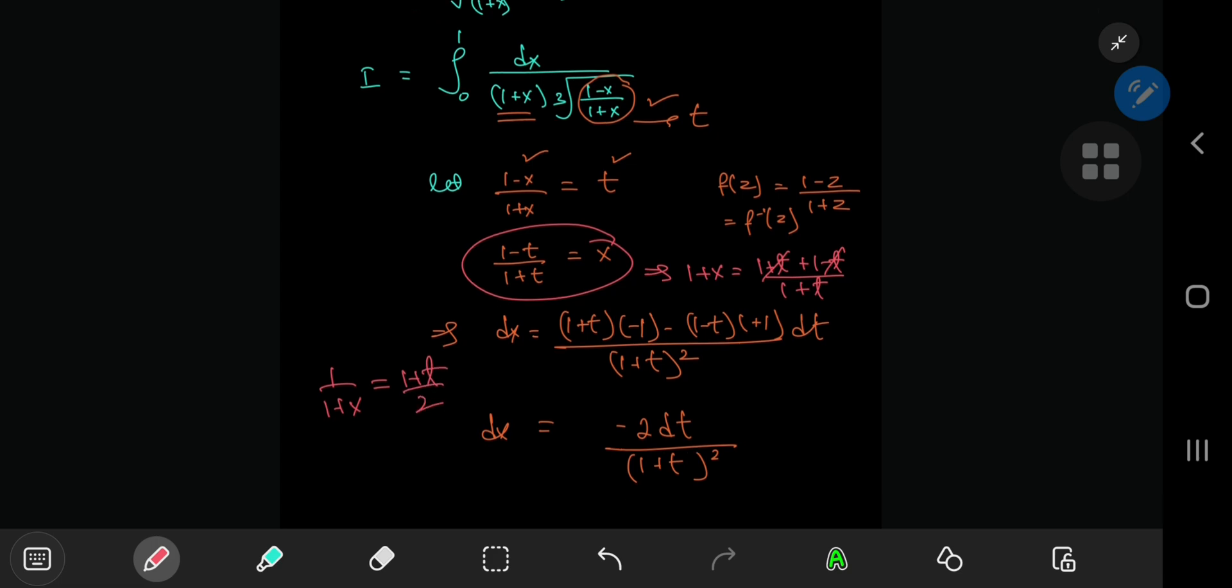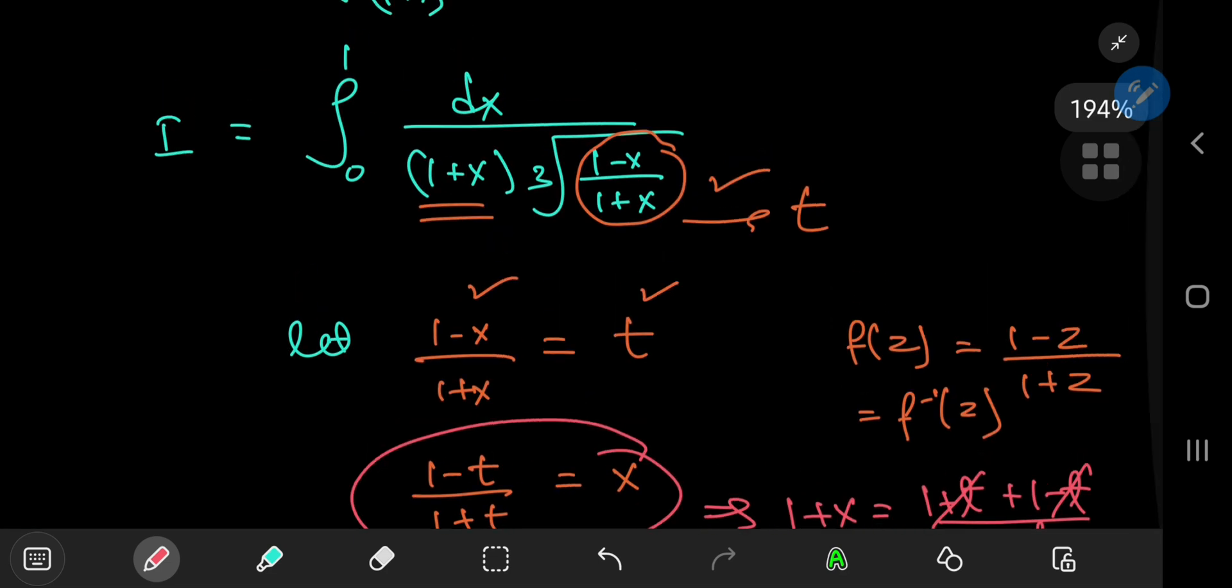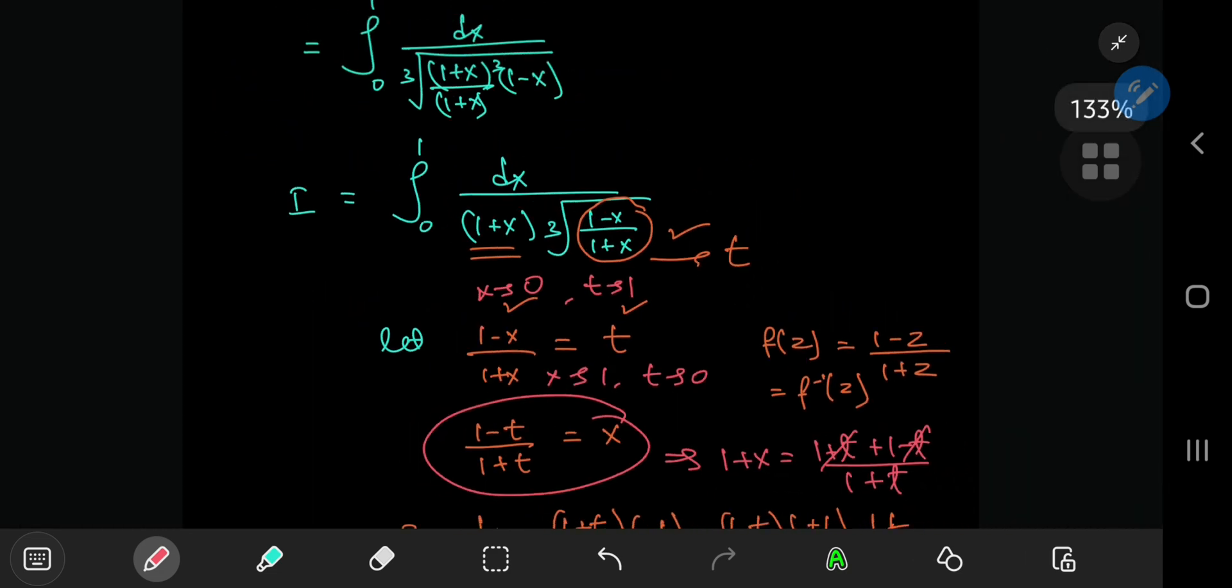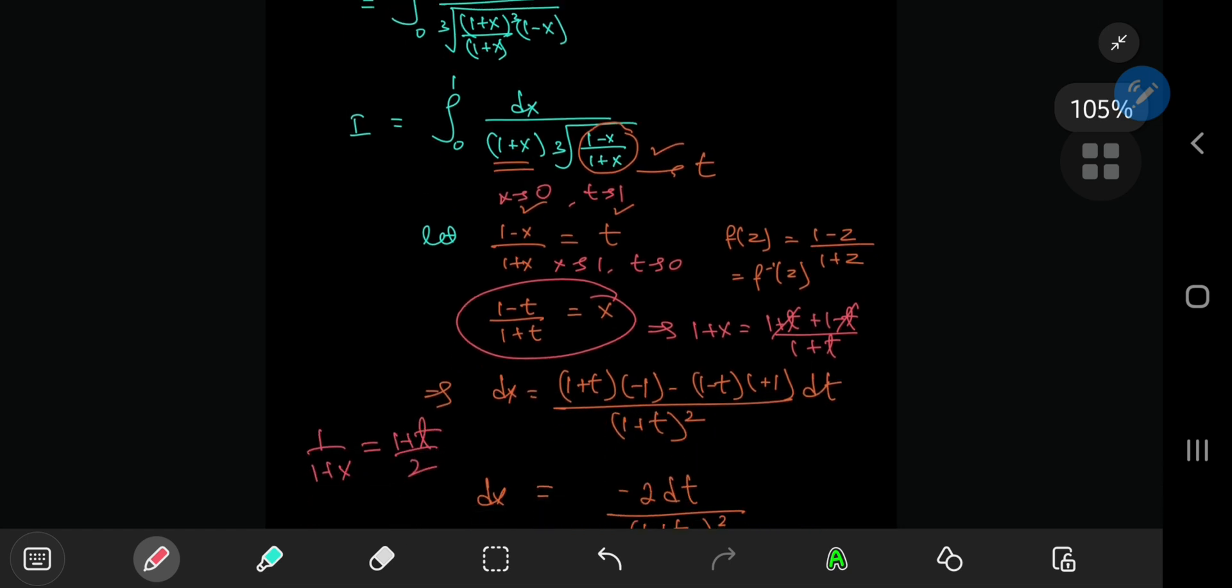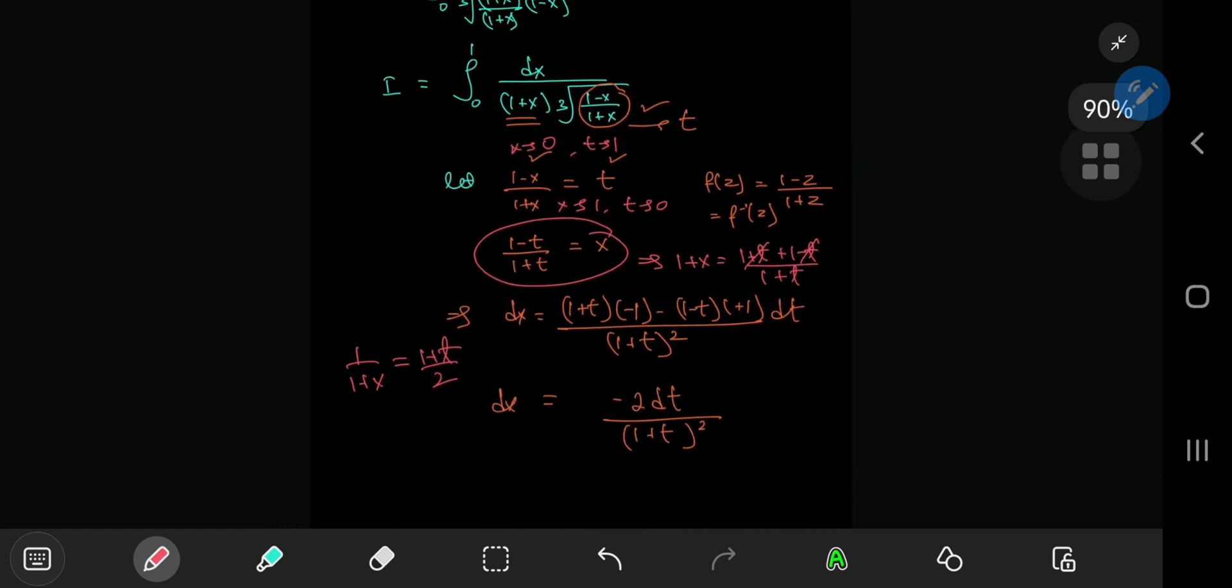As far as the limits of integration are concerned, as x approaches 0, t approaches 1 minus 0 divided by 1 plus 0, which is 1. Similarly, as x approaches 1, t will approach 0. So the limits of integration are switched up from 1 to 0.